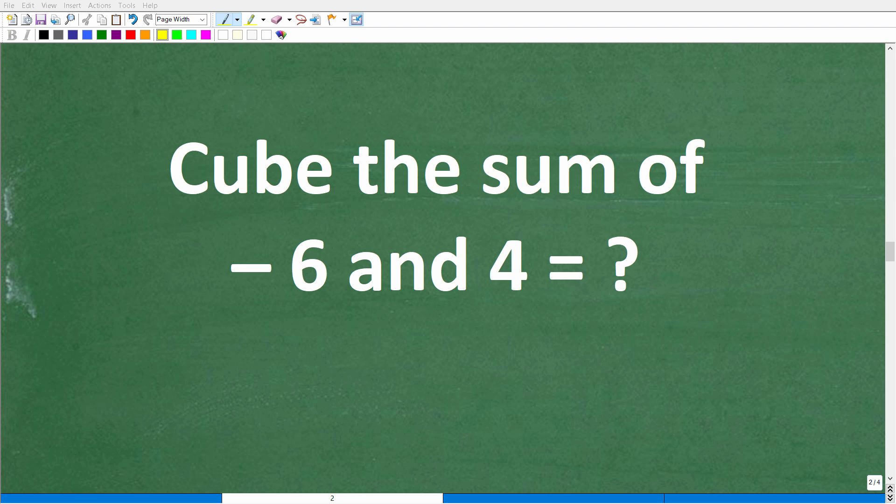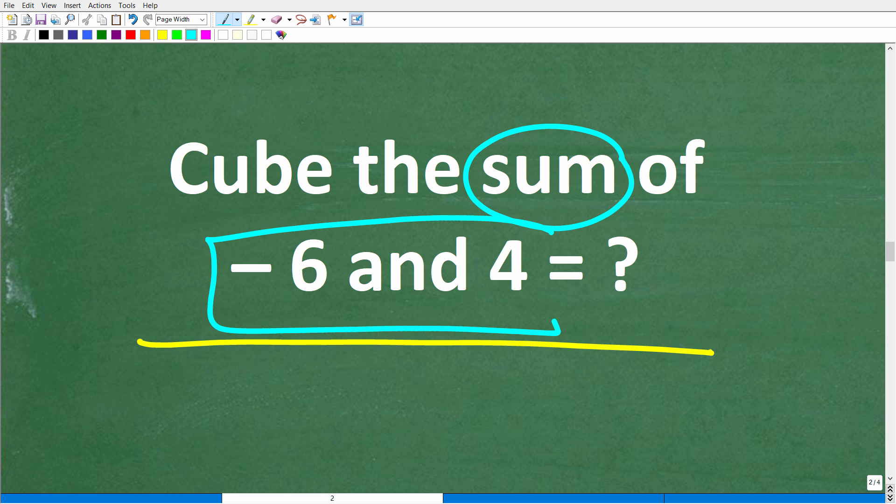Okay, so now that we understand the words cube and sum, we can actually calculate the answer to the question. But we have to do this in a certain order. Alright, so the first thing that we need to do is figure out the sum of negative 6 and 4. Then once we have that answer, we need to cube it, and then we will have the correct answer.